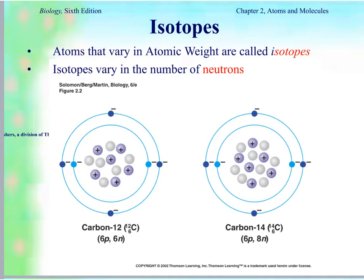Carbon has isotopes. Carbon-12 is called carbon-12 because the 12 refers to the atomic weight, which is protons plus neutrons — six protons and six neutrons equals 12. But some carbon atoms might have more neutrons. Carbon-14 has six protons plus eight neutrons — the neutrons are the gray ones in the diagram — and six plus eight equals 14, which is why it's called carbon-14.